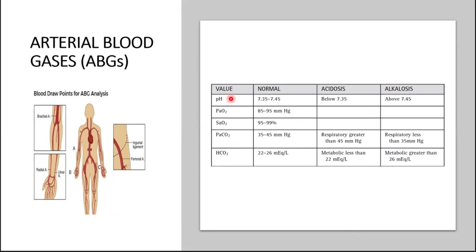We want the pH to be between 7.35 and 7.45 — ideally midway at 7.40. You need to memorize these values.